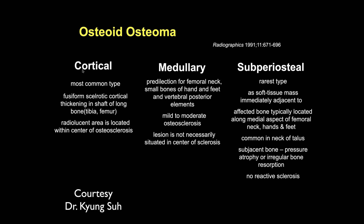They can be cortical, which is the most common type. They can be in the medullary bone, in the trabecular bone, and they can be subperiosteal, which is the rarest type.